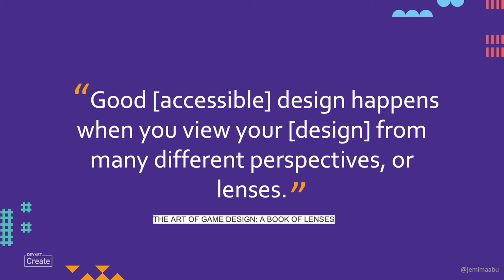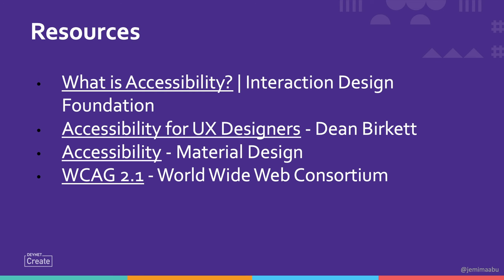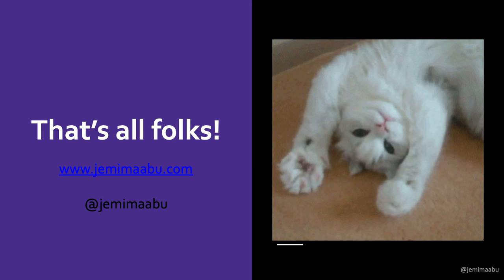Good design happens when you view your design from many perspectives or lenses. Even if it's not possible for you to understand how other people see your site, get other people to tell you. Because people ignore design that ignores people. If you build a site that is not accessible, it's not a great product and people aren't going to want to use it. That's about it from me — I hope you enjoyed the talk. I have a list of more resources you can check out. If you have any questions, reach out to me at jemimaabu.com or on Twitter or LinkedIn at Jemima Abu. Have a wonderful day. Bye!